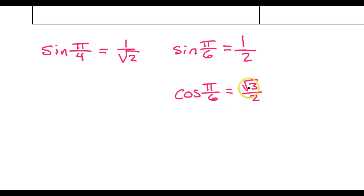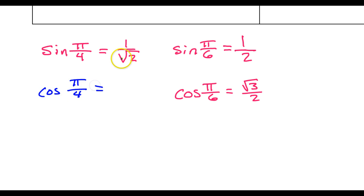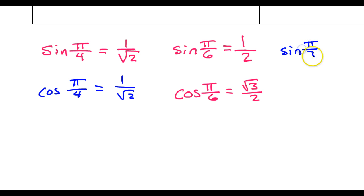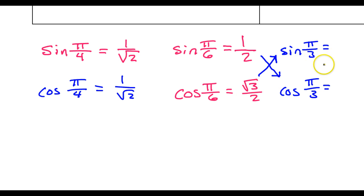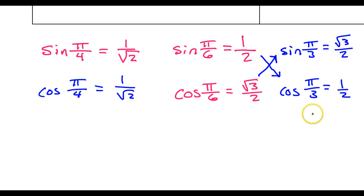In addition to these three facts, write down three more facts we'll refer back to as we do these problems. The cosine of pi over four is the same as the sine, so we write that down. Also write down the sine and cosine of pi over three — these will just be reversed. The sine of pi over three is radical three over two, and the cosine of pi over three is one half. So write these six facts down, starting with the three you memorized and then extrapolating the blue ones.